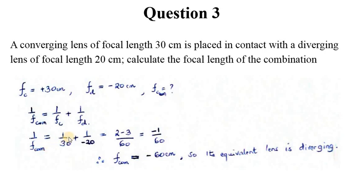1 over F combined is equal to 1 over 30 plus 1 over negative 20. Don't forget to carry on with the signs so we end up with the correct conclusion. From simple mathematics we end up with 2 minus 3 over 60, which is minus 1 over 60.